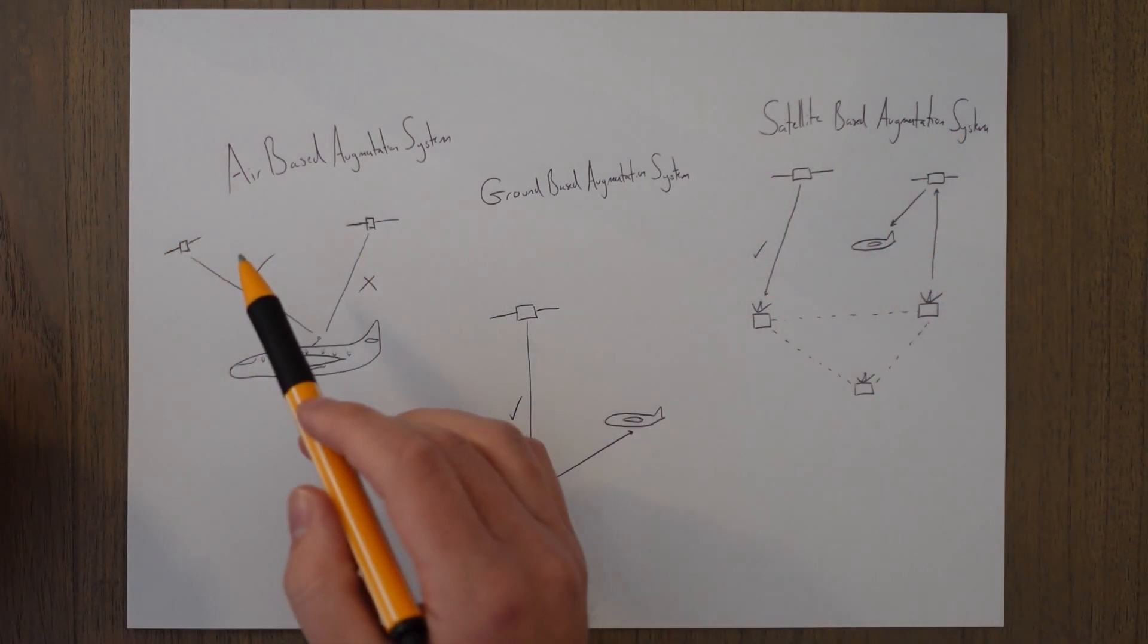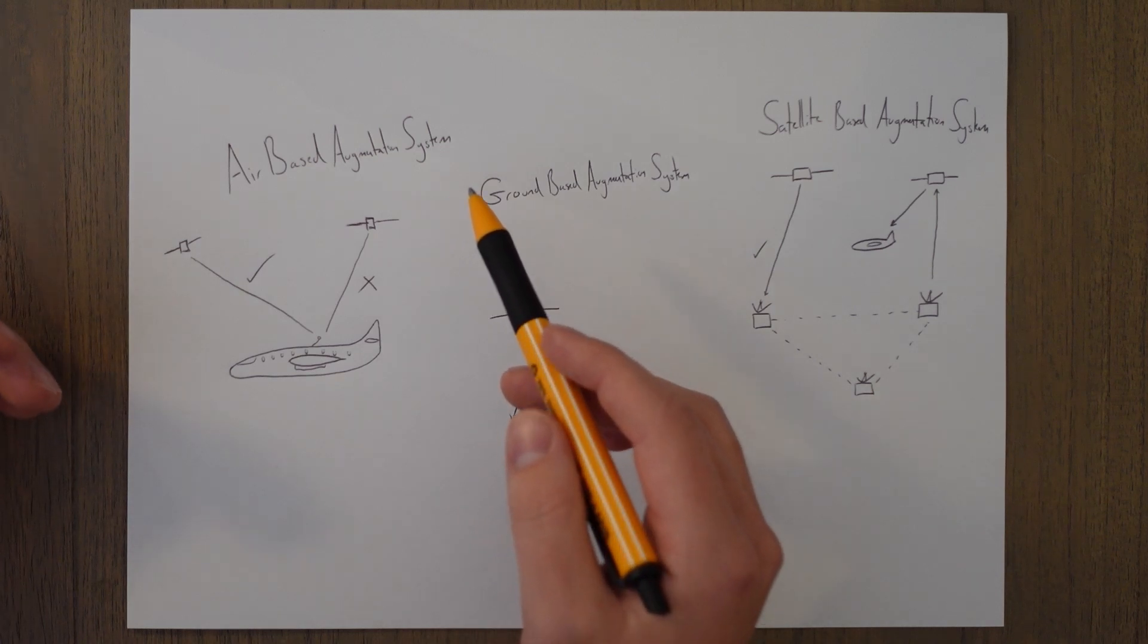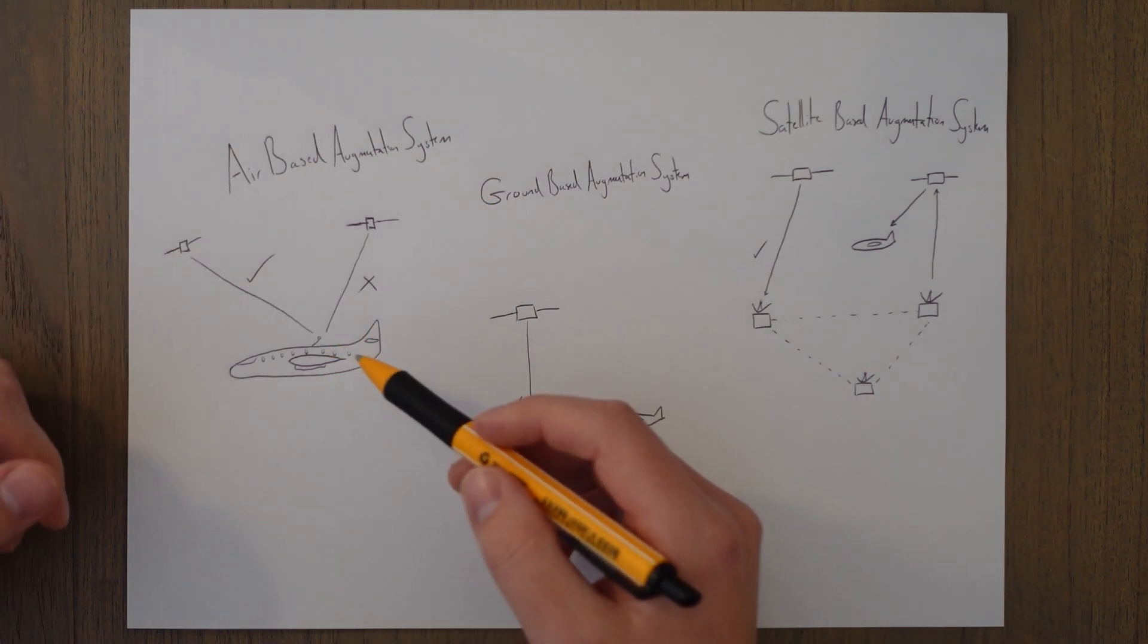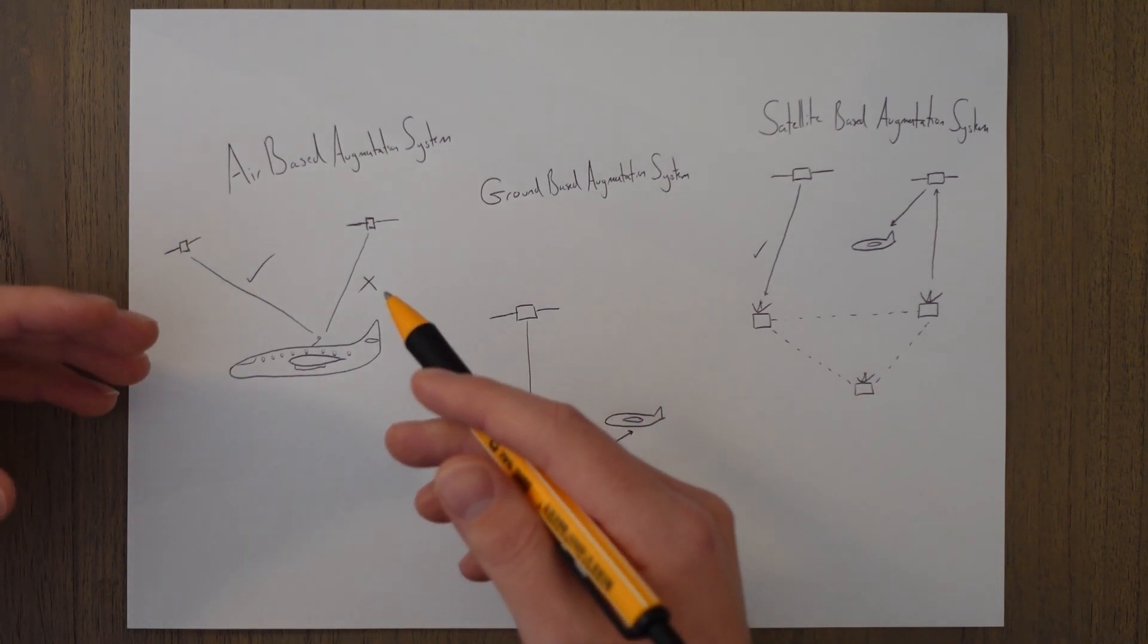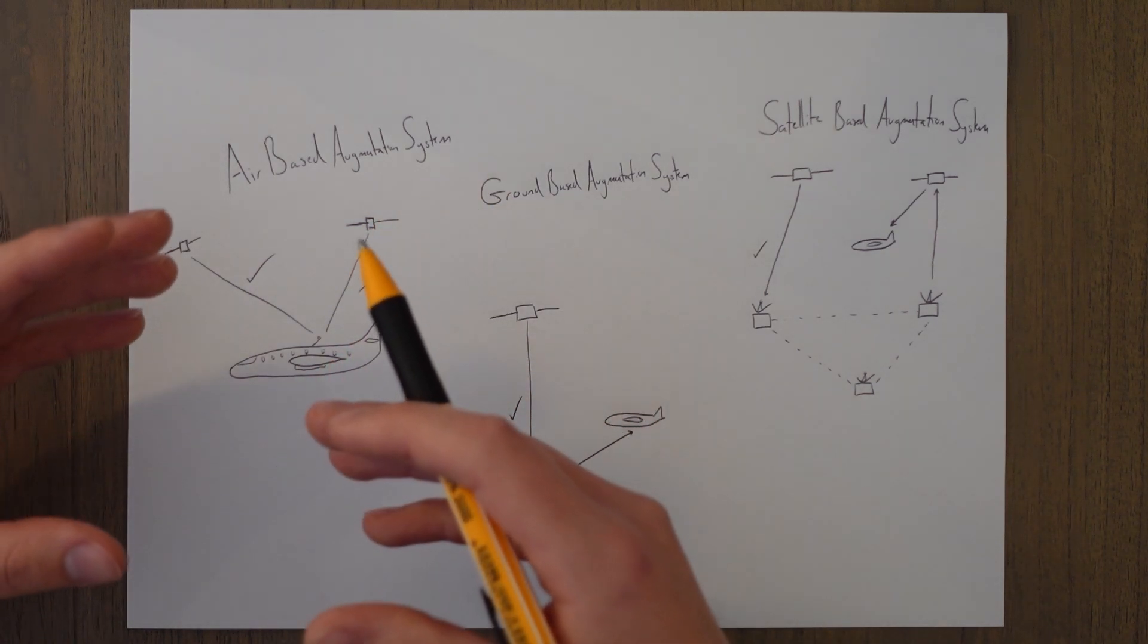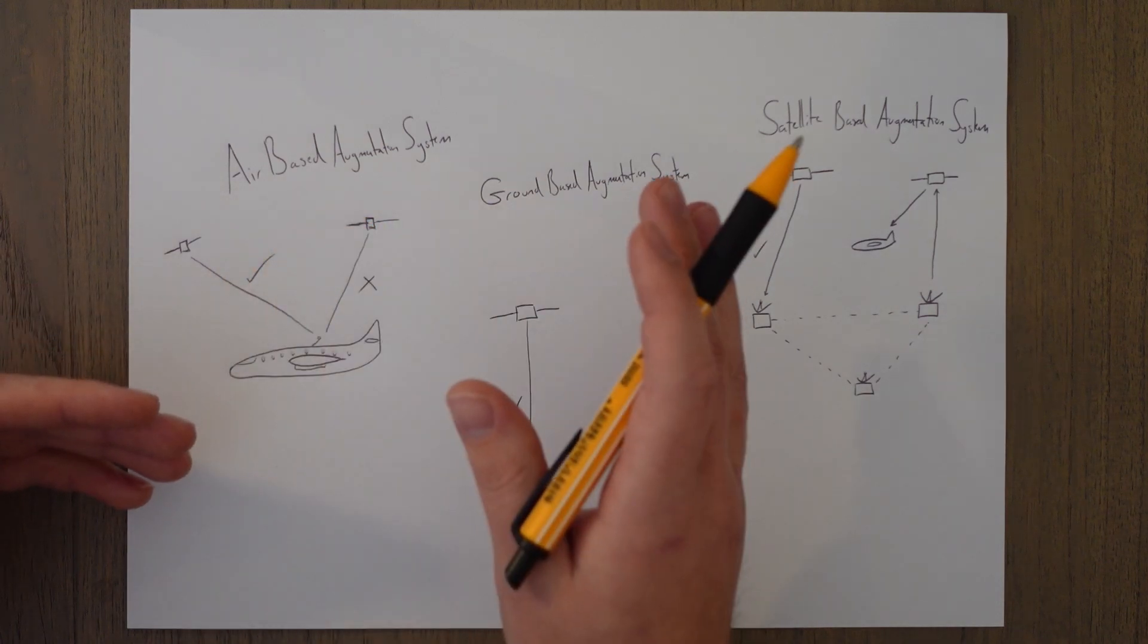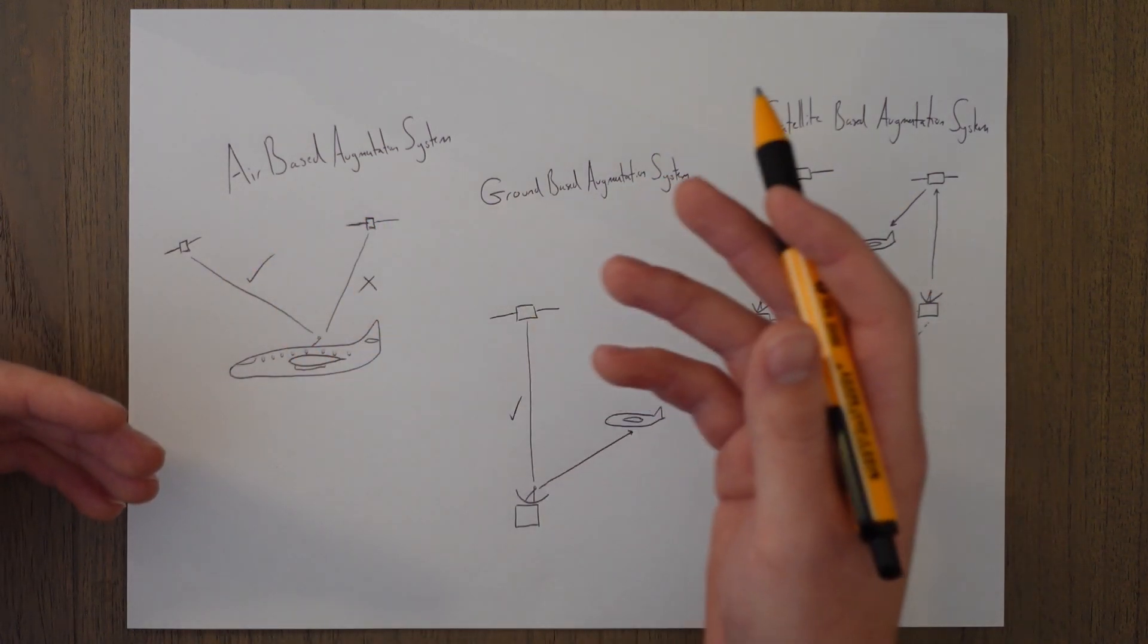The first is called ABAS which is Air Based Augmentation System, where the receiver in the aircraft can monitor the integrity and reliability of the signals received from the position fix and decide if it's worth using that information from the GPS signal or if it's worth discounting that information for something else.